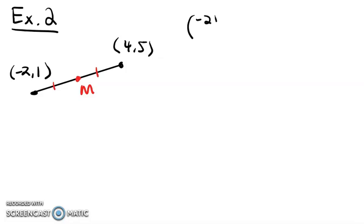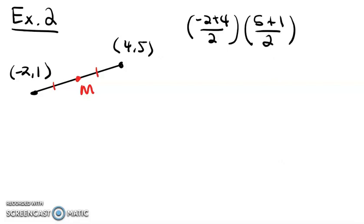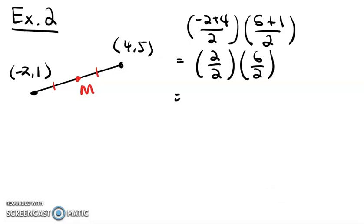So we're going to say negative 2 plus 4 over 2 for our x coordinate. And then we're going to say 5 plus 1 over 2 for our y coordinate. Negative 2 plus 4 is going to be 2 over 2. And then 5 plus 1 over 2 is 6 over 2. 2 over 2 is just 1, so our x coordinate is 1. 6 over 2 is 3, so our y coordinate is 3. So our midpoint has coordinates (1, 3).